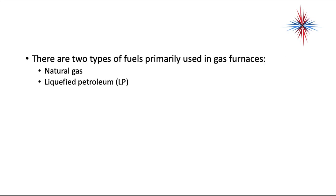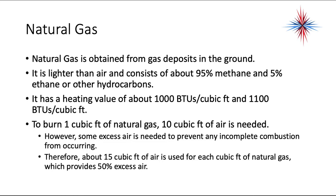There are two types of fuels primarily used in gas furnaces: natural gas and liquefied petroleum. Natural gas is obtained from gas deposits in the ground. It's lighter than air and consists of about 95% methane and 5% ethane and other hydrocarbons. It has a heating value of about 1,000 to 1,100 BTUs per cubic foot. To burn one cubic foot of natural gas, 10 cubic feet of air is needed. However, some excess air is needed to prevent incomplete combustion, so 15 cubic feet of air is used per cubic foot of natural gas — providing about 50% excess air. If you're taking a certification test, you absolutely must know: 10 cubic feet for complete combustion, 15 cubic feet under normal conditions.